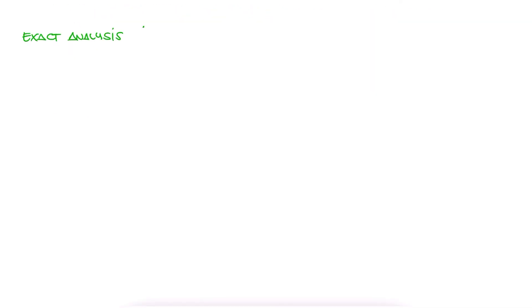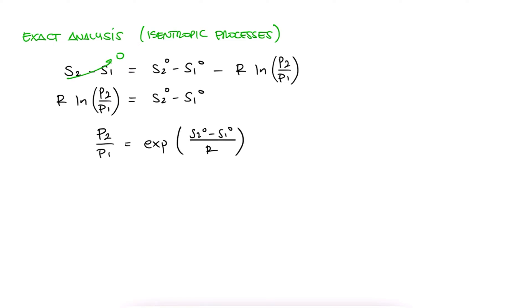The second case is for the exact analysis. With the expression for the exact analysis, we see that P2 over P1 is the exponential of the difference of reference entropies over R, or the exponential of reference s2 over R over exponential of reference s1 over R.